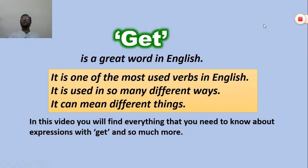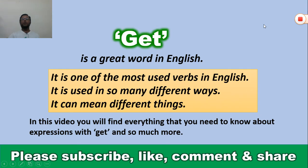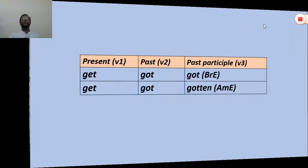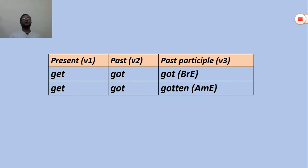Get has three forms: present, past, and past participle. Present: get. Past: got. Past participle: got in British English, and gotten in American English. So: get, got, got — British English; get, got, gotten — American English.